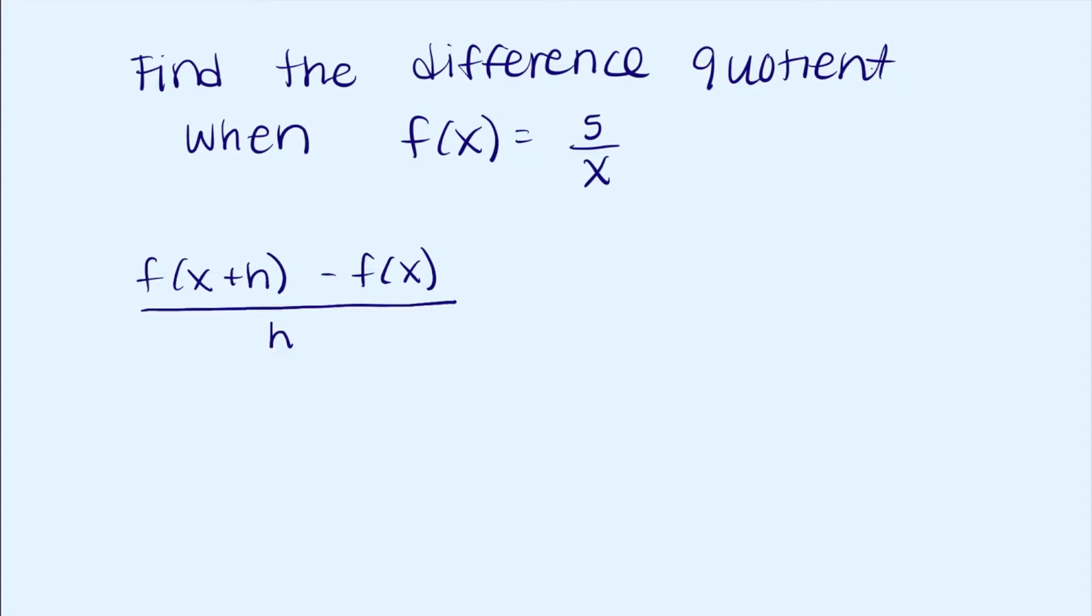To get f of x plus h, we plug in x plus h wherever there's an x, then minus f of x which is 5 over x, and all over h. To simplify this down, we'll have to get a common denominator for the numerator.